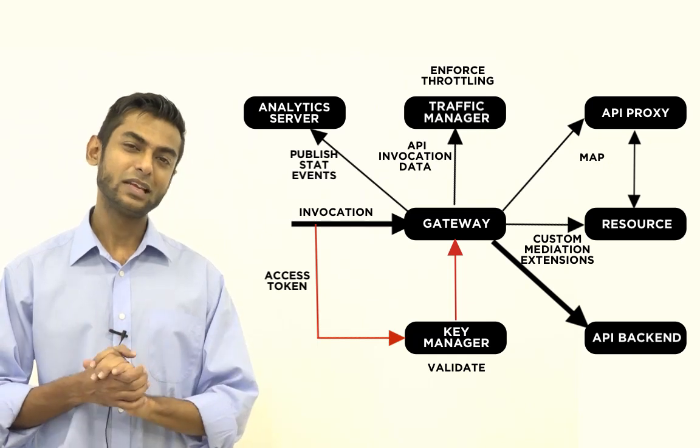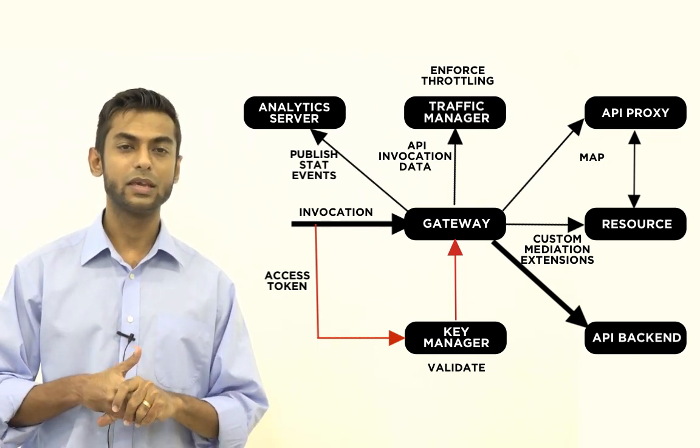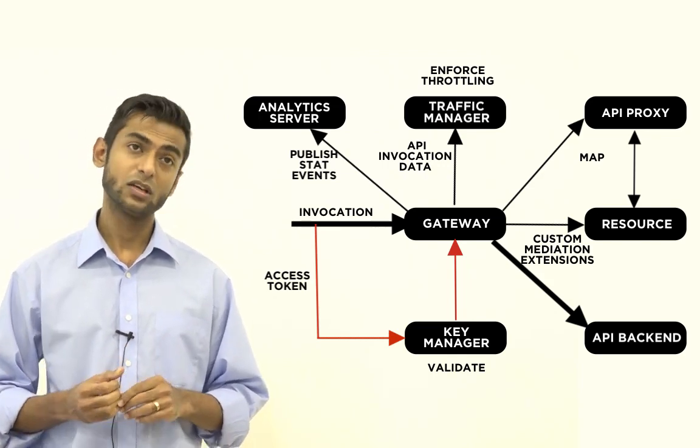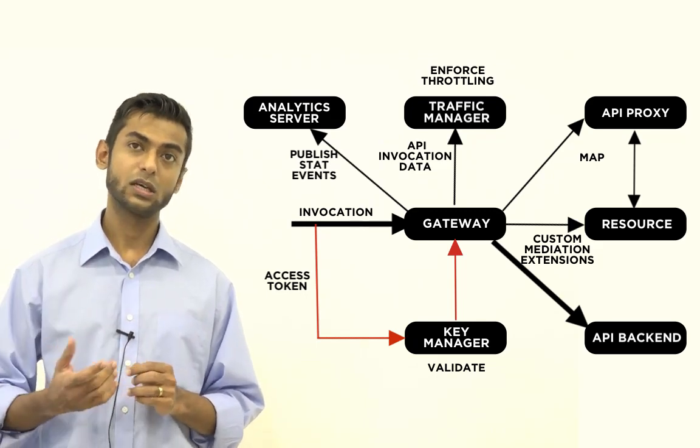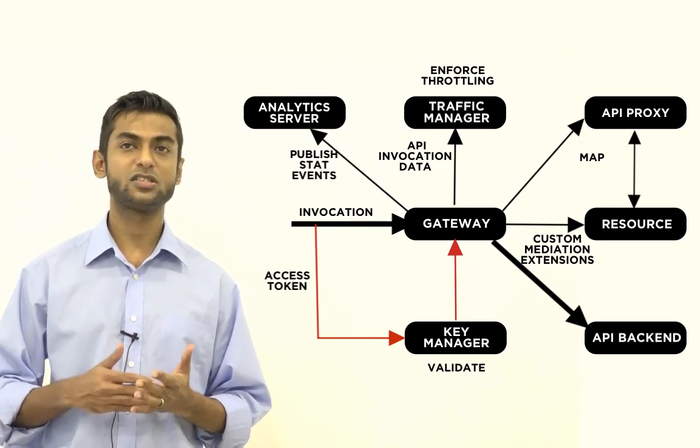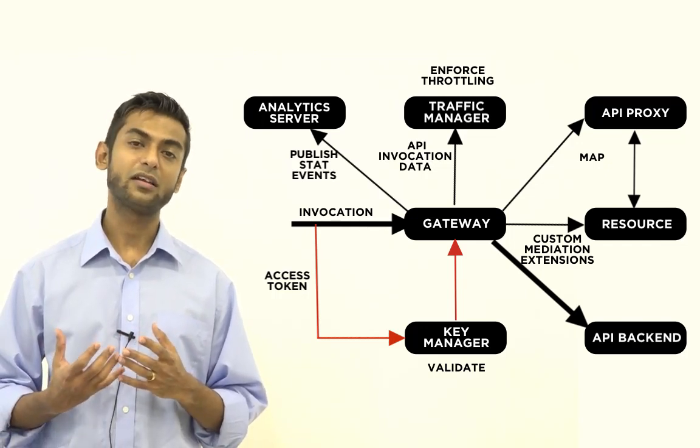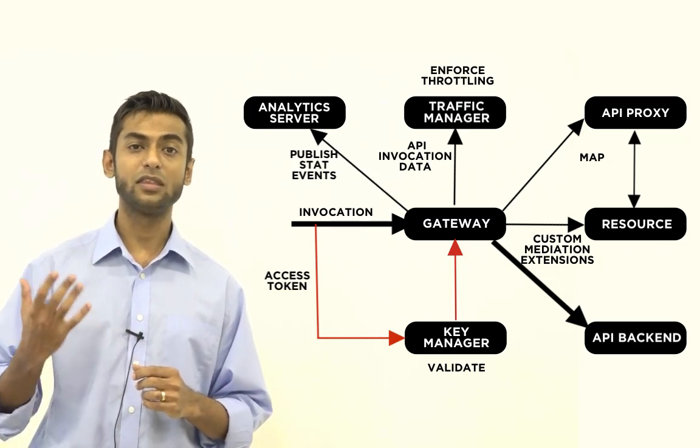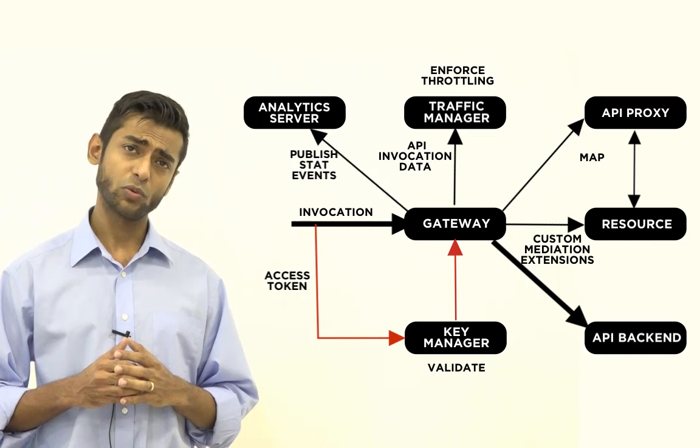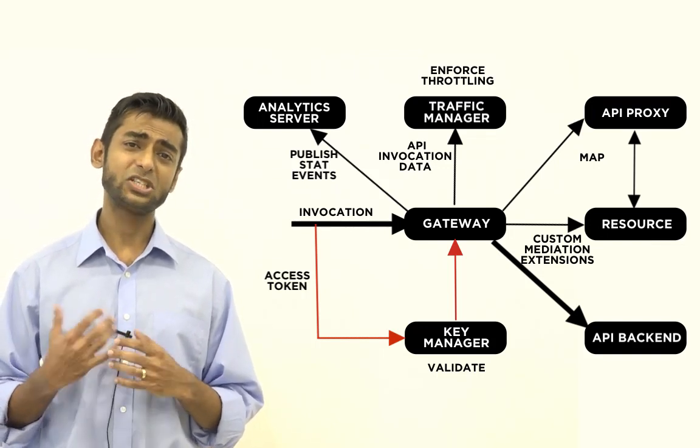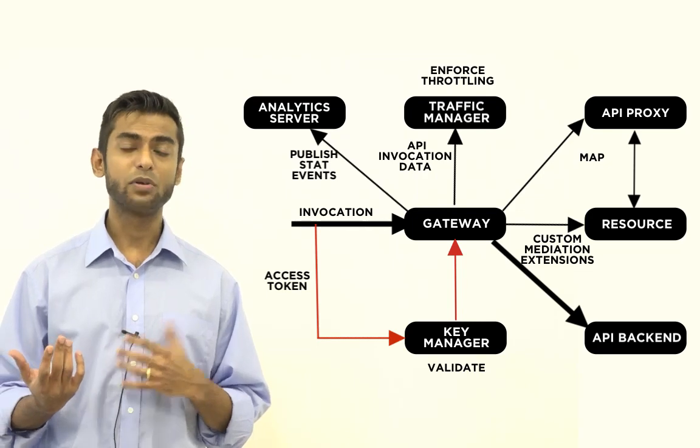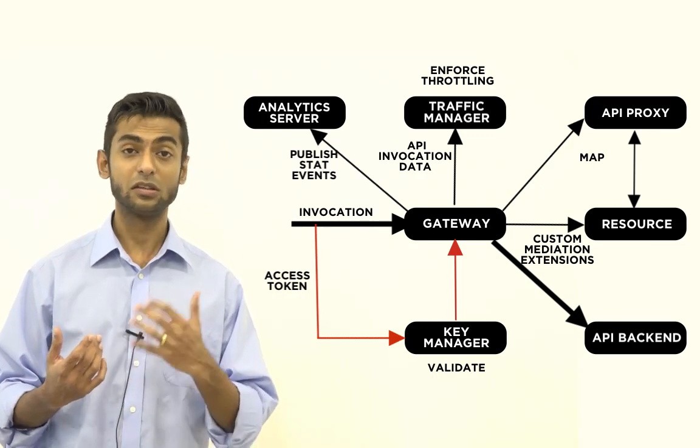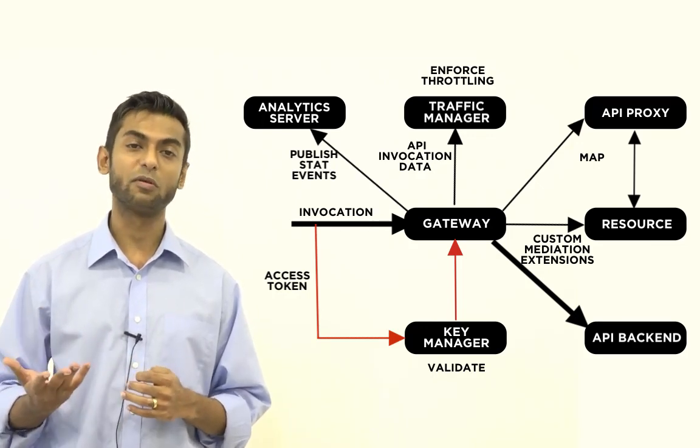So the next thing that the API Gateway does is it caches information regarding resources. So if you take API resources, there is certain information such as the authorization type and throttling level that are defined for API resources, and these are usually properties that reside in the database. So by caching these properties as well, it prevents having to always go to the database to retrieve these properties. So this also improves performance.